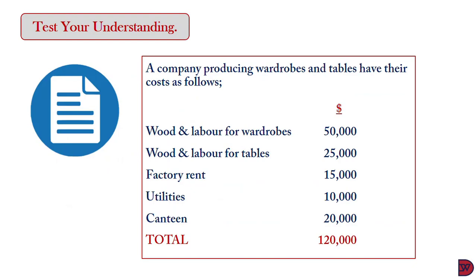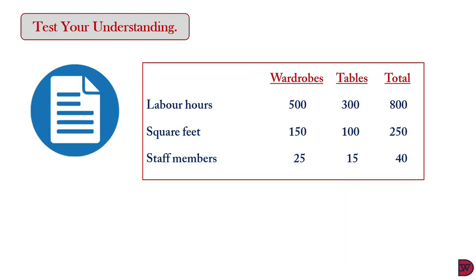Let's test our understanding. A company producing wardrobes and tables has the following costs: wood and labor for wardrobes is $50,000; wood and labor for tables is $25,000; factory rent is $15,000; utilities are $10,000; and canteen is $20,000 — giving a total cost of $120,000.